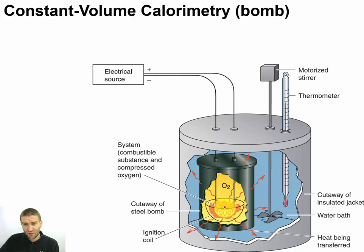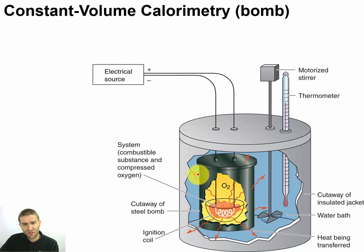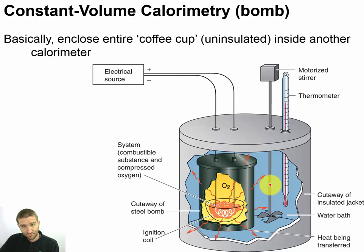We'll have our sample here so we can light it on fire. We've got oxygen so it can do a combustion reaction, and we have it all in this rigid-walled container that keeps anything from expanding or doing any work. The heat transfers straight out — this part is not insulated — and we'll see how much temperature change we get on the outside. Basically, this piece is going to be our coffee cup calorimeter, put inside of a bigger calorimeter.